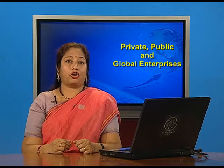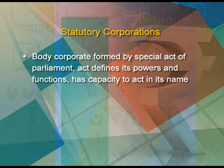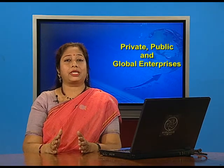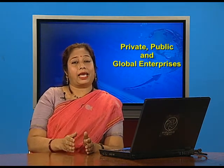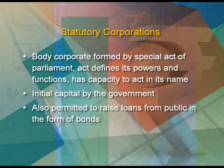The next form of public enterprise is the statutory corporation — a body corporate formed by a special act of parliament. The act defines its powers and functions, and it has the capacity to act in its own name. These corporations are individual legal entities that can sue and be sued in their own name. Initial capital is provided by the government, but they can also raise loans from the public in the form of bonds.